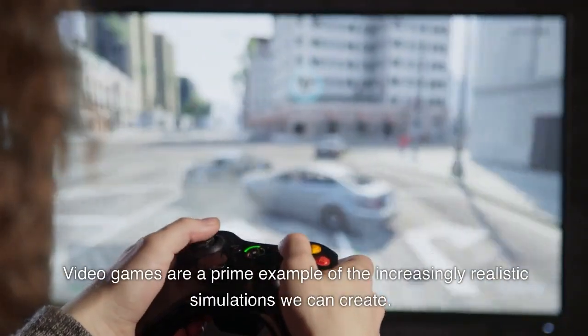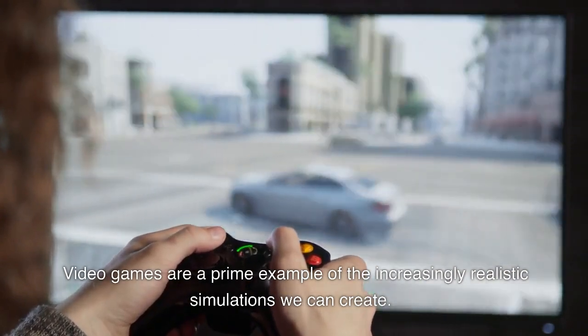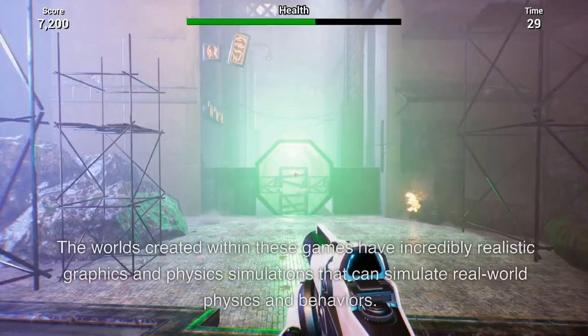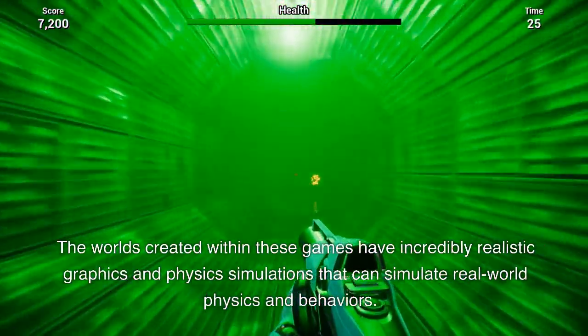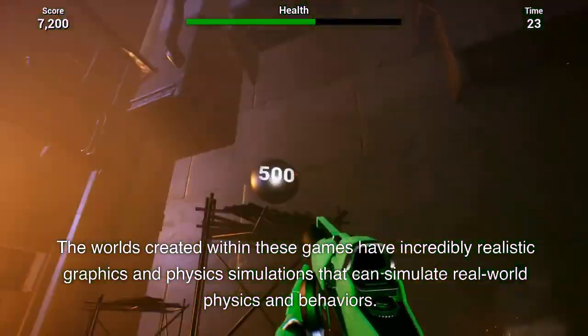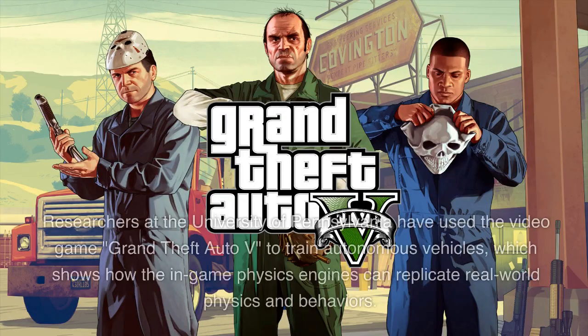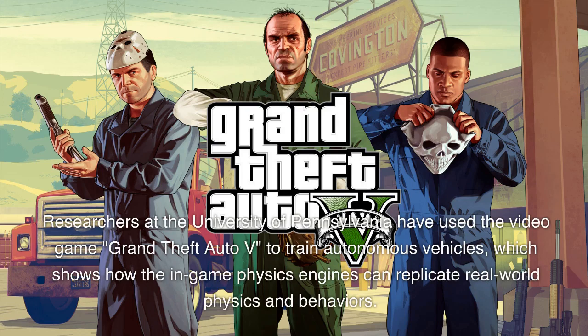Video games are a prime example of the increasingly realistic simulations we can create. The worlds created within these games have incredibly realistic graphics and physics simulations that can simulate real-world physics and behaviors. Researchers at the University of Pennsylvania have used the video game Grand Theft Auto V to train autonomous vehicles, which shows how the in-game physics engines can replicate real-world physics and behaviors.